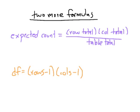Two more quick formulas before we do our examples. First, we have to think about our expected counts. The formula for expected counts is row total times column total divided by table total. Second, we have a new formula for degrees of freedom for these two tests — both for tests of independence and homogeneity. Degrees of freedom equals rows minus 1 times columns minus 1.